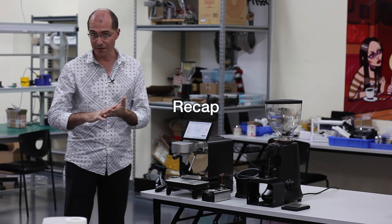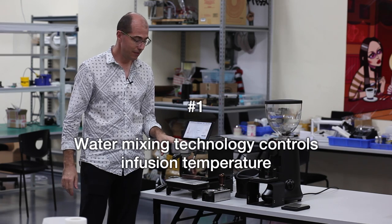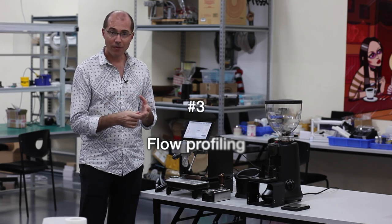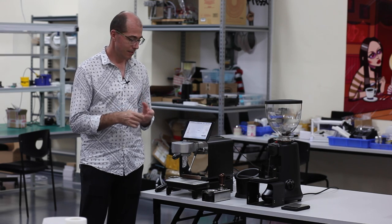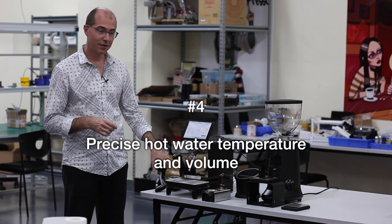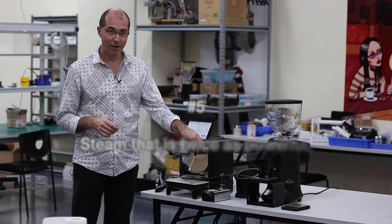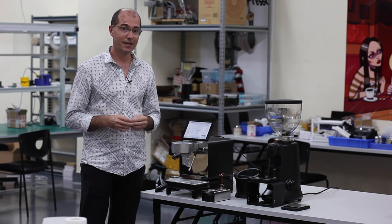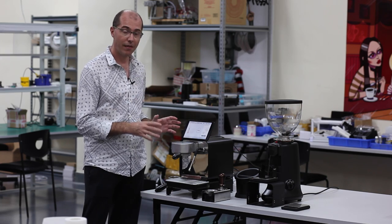So those five innovations: the temperature of the infusion, the pre-infusion detection, the constant flow rate with flow priority mode, the hot water volume and temperature, and the twice as powerful half as wet steam. Those are five things that you will not find in any espresso machine that we put together for you that we think make the best espresso you've ever tasted.